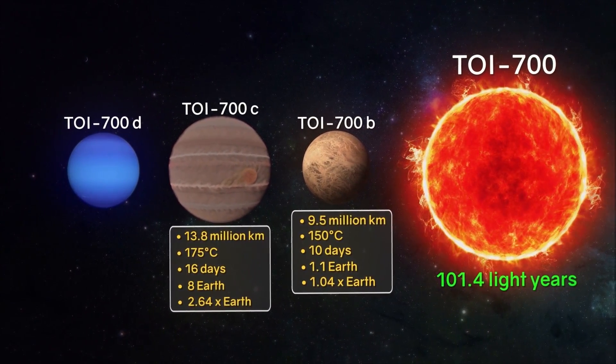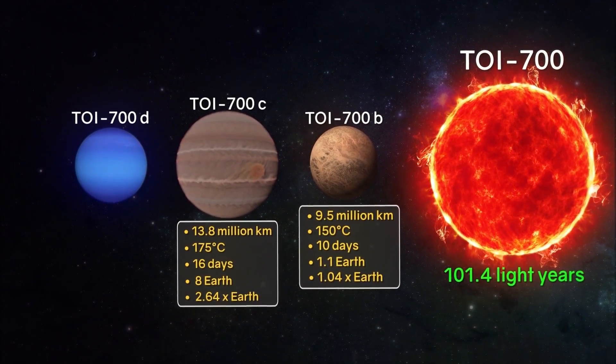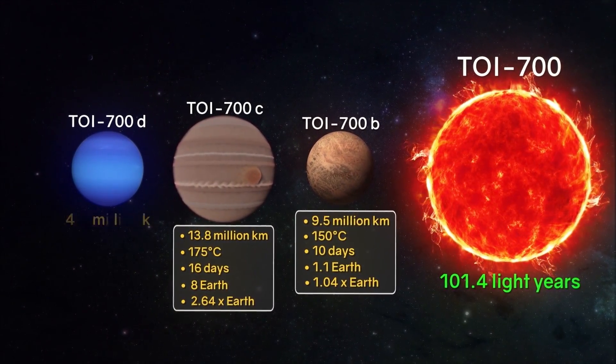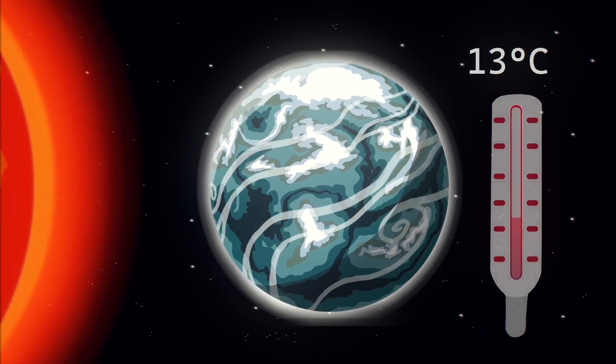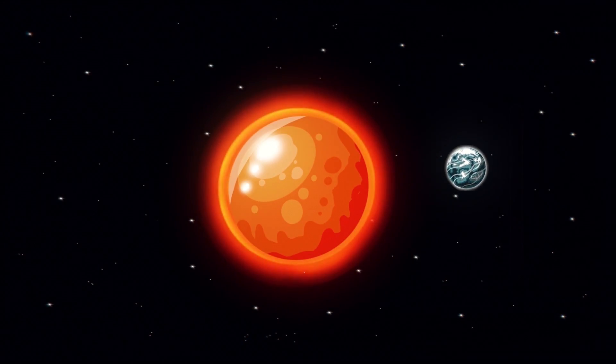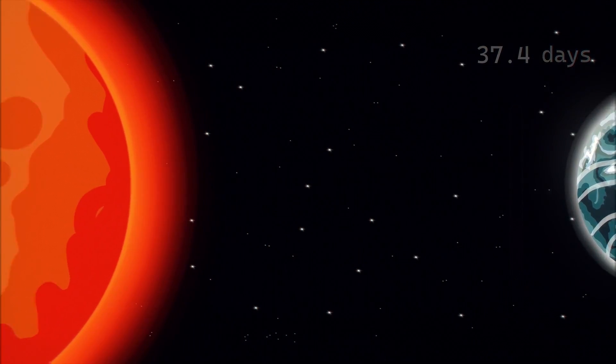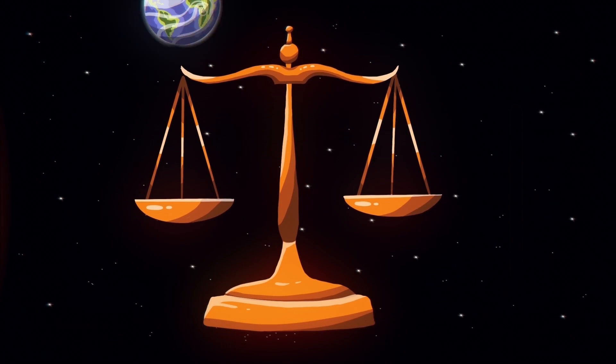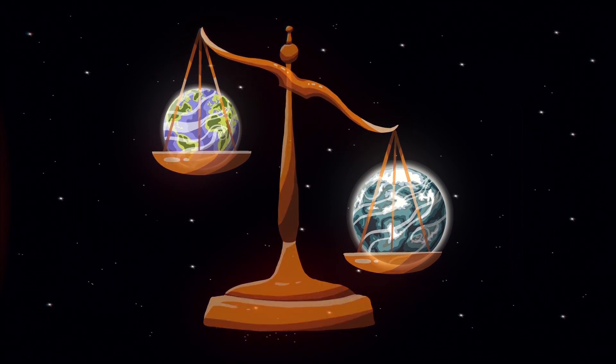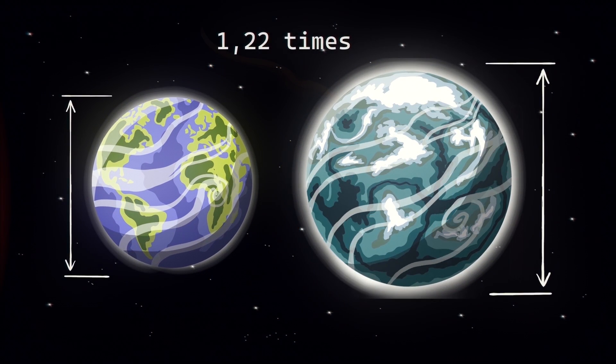The discovered parameters for this exoplanet are as follows: The distance to the star is approximately 24.4 million kilometers. The average surface temperature is minus 13 degrees Celsius. The period of rotation around the star is 37.4 days. The mass is about 1.57 times that of the Earth. Size 1.22 times the size of the Earth.